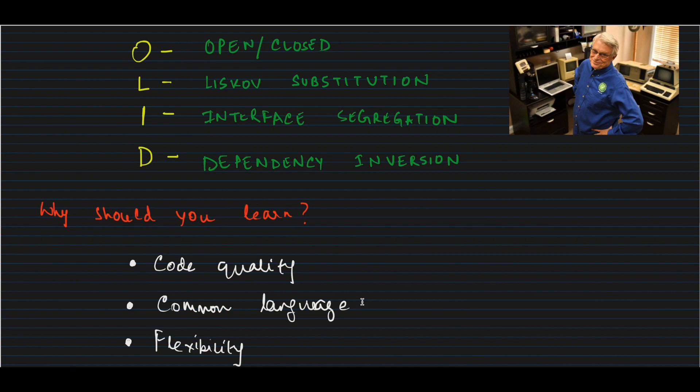Number one is code quality. Obviously all of us when we write code we want our code to be well structured. We want our code to be easy to understand, less prone to errors.